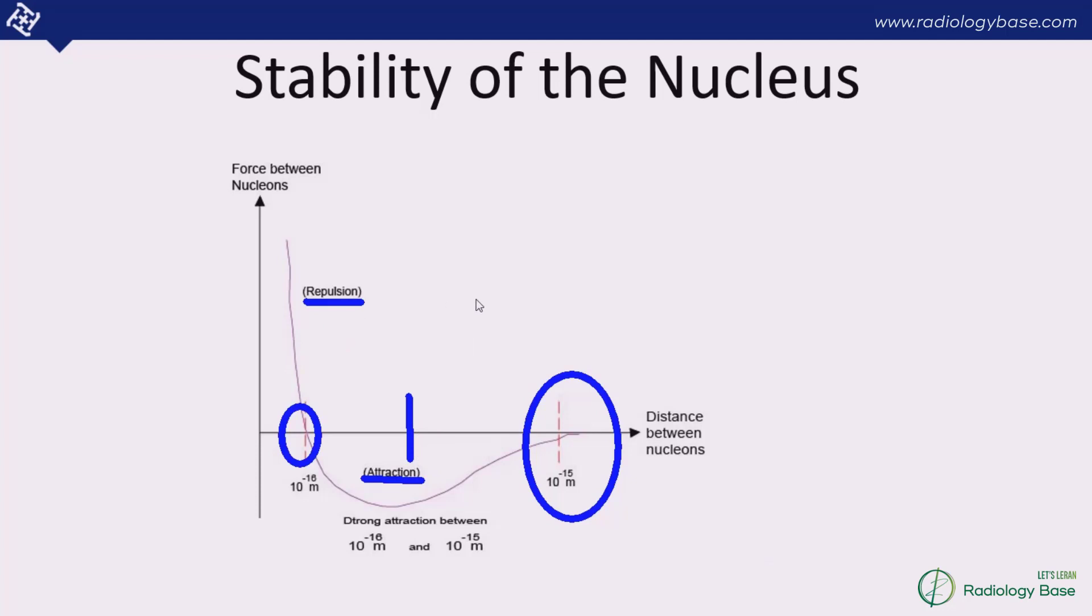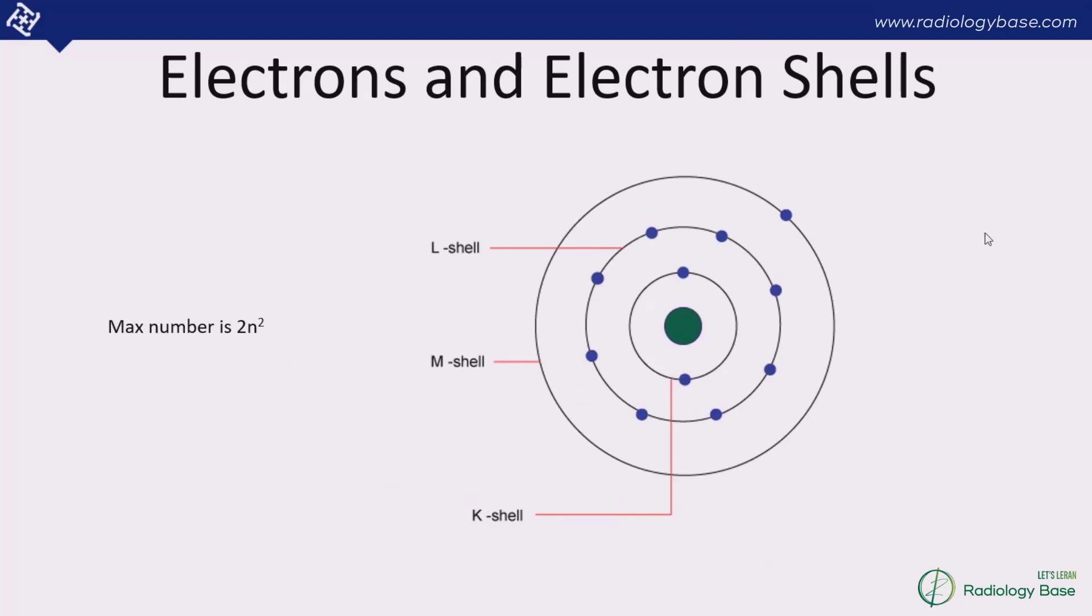This is different than the electrostatic force of repulsion. With regards to the electron shells, the innermost is the K shell and it contains 2 electrons. The next one is the L shell which contains 8 electrons. This number is derived from this formula where you can put the number of the orbit in the place of N and you can calculate how many electrons that shell can contain.